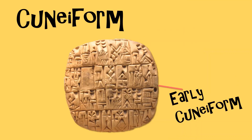Let's start by talking about cuneiform. Perhaps you've heard of it. This is one of the earliest forms of writing, invented by the Sumerians around 5,000 years ago. It's written by pressing a stylus into soft clay to make little triangle shapes. These triangles are what give the writing its name — cuneiform just means wedge-shaped.